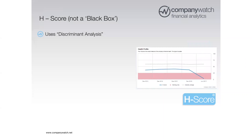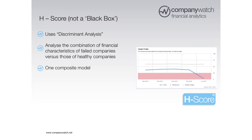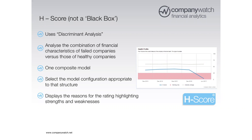That brings us to Company Watch's measurement of financial strength from traditional financial accounts: the H-score, which is similar to the Z-score. It still uses discriminant analysis, but instead of bare financial ratios it transforms the data, and we actually build a suite of models looking at different types of companies based on their balance sheet. A services company would have a very different looking balance sheet to a retail company — which might have much more inventory — so we deal with those differently.